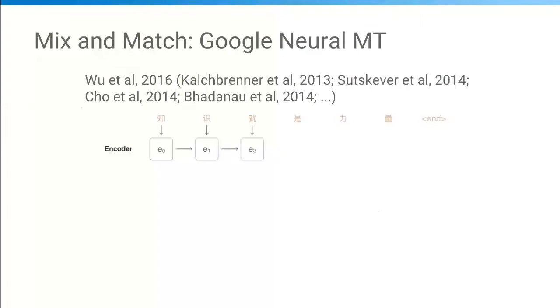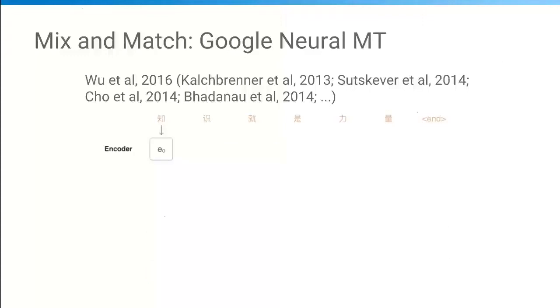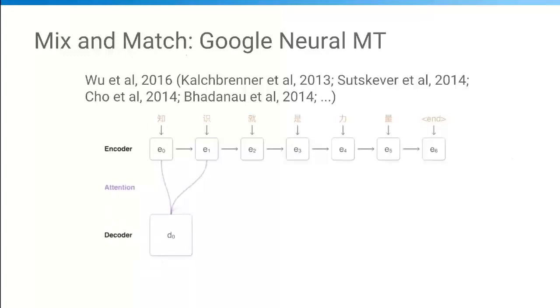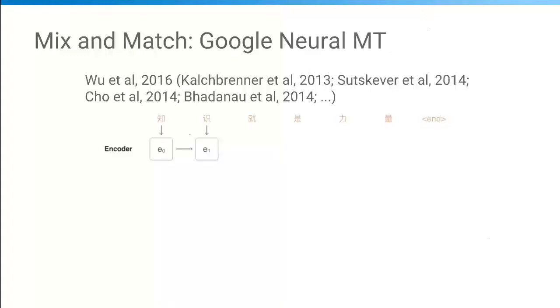At the end of the day, what ends up happening is you mix and match sequence encoders, decoders, attention models, and so on. And amazingly, this is actually how Google Translate is operating at the user level. Some research done a couple years ago by Yonghui and Mike Schuster managed to put this new architecture to drive a lot of traffic in Google Translate.